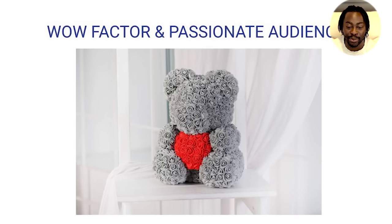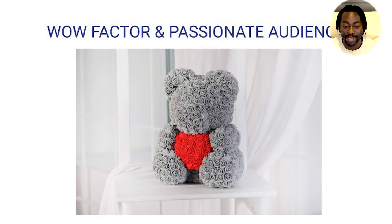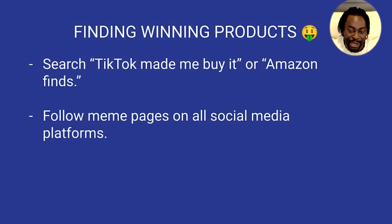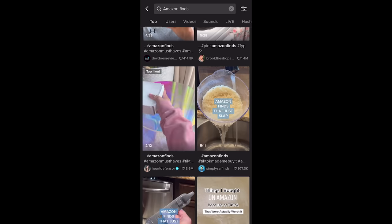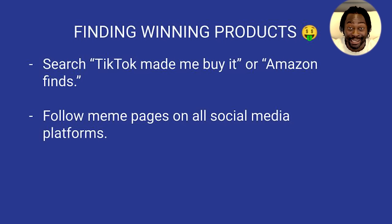This product right here is a rose bear — obviously something for people in relationships or a sentimental gift, whether it's an anniversary or just because. It's a great gift, a bear made out of roses with a heart. So how do you actually find winning products? One way is to search 'TikTok made me buy it' or 'Amazon finds' on TikTok and just scroll — you'll come across a bunch of posts and videos of accounts showing you the next hot thing to buy.